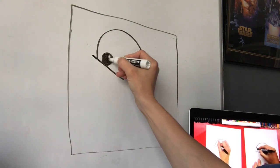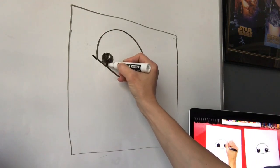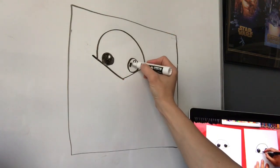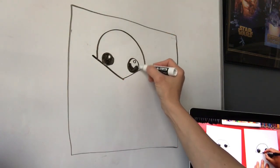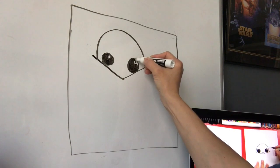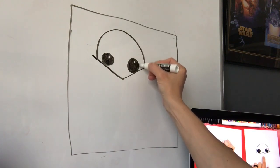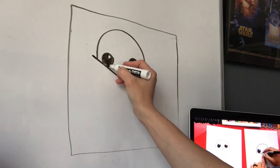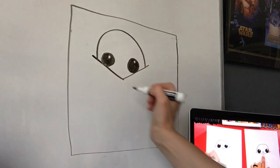You can use whatever color you want to color them in. If you want to have blue eyes or brown eyes or green eyes or whatever color you'd like. I'm just using black to do all of it. Make this a better circle.